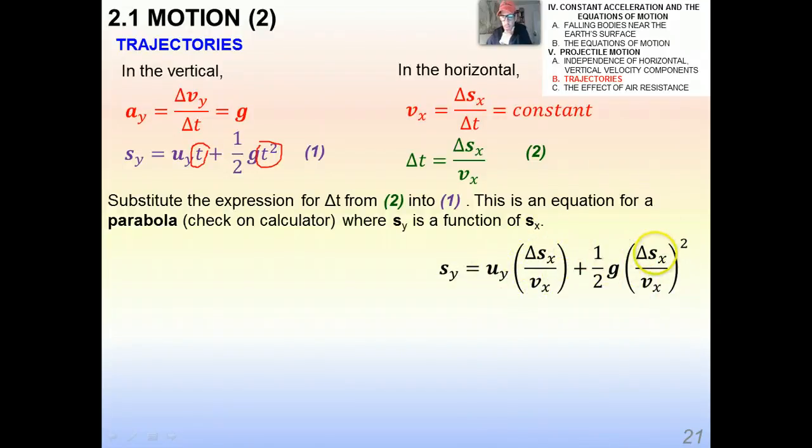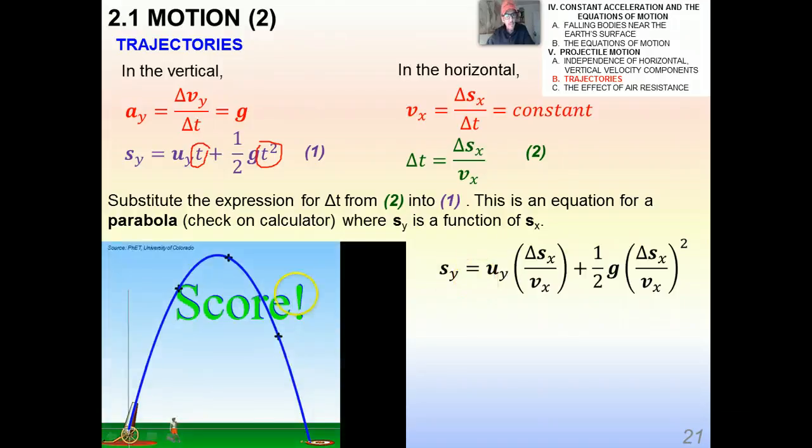Remember, s_x is your variable here. So here's s_x squared, and all this other stuff is just a constant. u_y over v_x is also a constant. So that's kind of interesting—this is actually proof that it's a parabola.